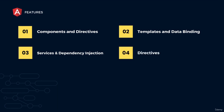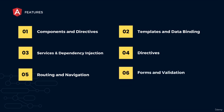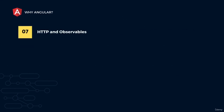Angular's directives allow developers to extend HTML and create reusable components shareable across multiple applications. Routing and navigation allows developers to map URLs to specific components, while navigation provides a way to move between different views. Forms provide a way to encapsulate input controls, while validation ensures user input is correct. The HTTP client module provides a powerful way to interact with remote servers, while observables provide a way to handle complex asynchronous data streams.